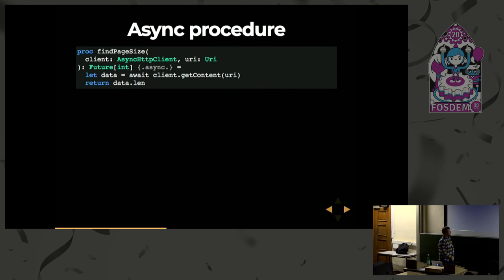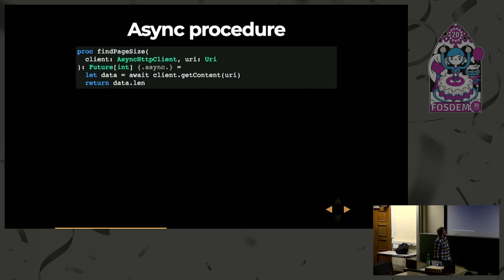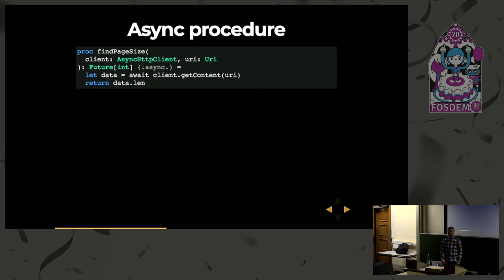So let's move on to async procedures. Here we have a procedure called findPageSize. It takes two arguments — an async HTTP client and a URL — and it returns a future containing an integer. You see the async pragma again to signify that it's an async procedure. In the body, we use the HTTP client to send an HTTP GET to the URL and then return the length of the data that we receive. The question now becomes: since NIM has no idea about how async procedures work, how do we express this without the async pragma?